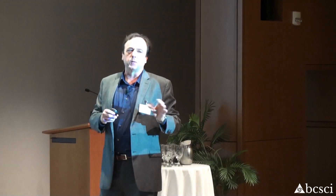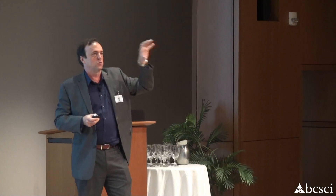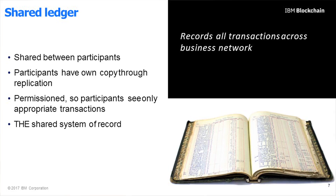Let me explain those: consensus means everybody is agreeing on the transaction. Providence is the origin of the data. Immutability means you can't change it — if you want to make a change in blockchain, it has to be done by consensus. Finality means there is one single source of truth.